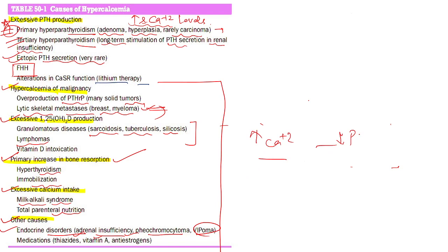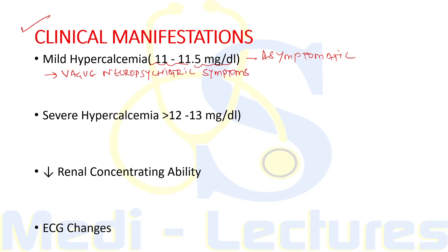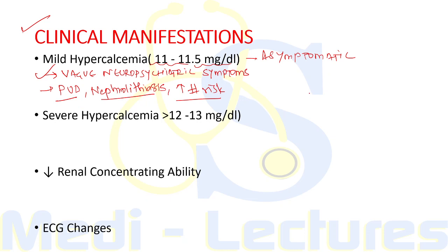When hypercalcemia is due to increased PTH, we will have elevated PTH levels as in primary hyperparathyroidism and FHH. Mild hypercalcemia, defined as serum calcium 11 to 11.5 mg/dL, is usually asymptomatic and recognized on routine measurements. Some patients present with vague neuropsychiatric symptoms like trouble concentrating, personality changes, and depression. Other presenting symptoms include peptic ulcer disease, nephrolithiasis, and increased fracture risk due to bone resorption.